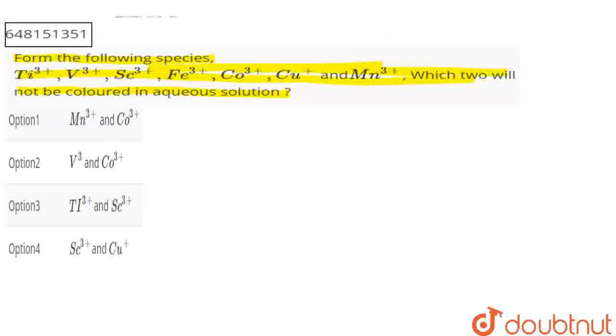The species that will not be colored in aqueous solution. I have the first one, titanium 3 positive. Titanium has total 4 electrons, so now it will only be 1d electron. It will be colored in aqueous solution.